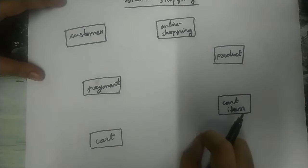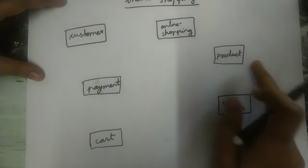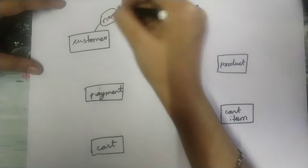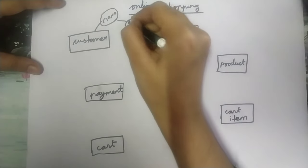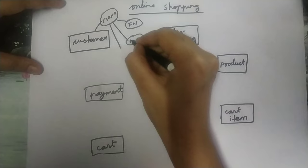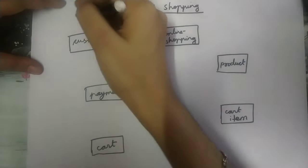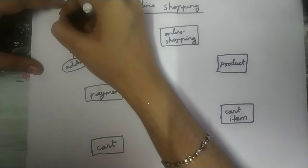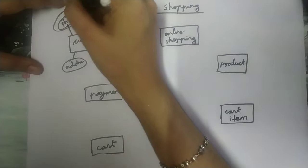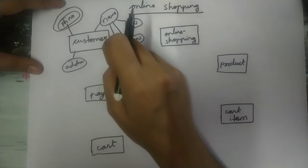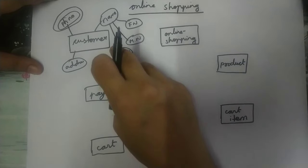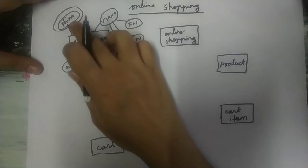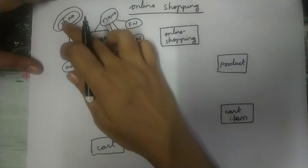Now for each entity we must write its attributes, that is its characteristics. So for customer, there will be some name, and this name can be further divided into three as first name, middle name, and last name. Then customer will have an address. Then customer will have a phone number, and this must be written inside double ovals because the customer can have more than one phone number — so this phone number is a multivalued attribute and must be written inside a double oval.